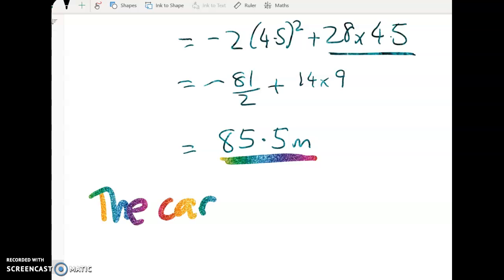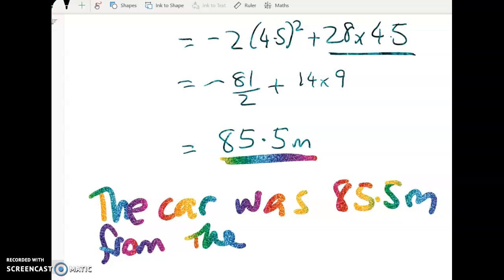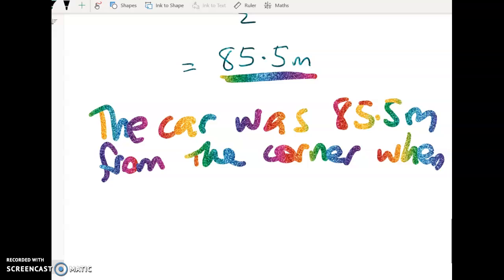So the car was 85.5 meters from the corner when brakes applied. Something like that. So there you go.